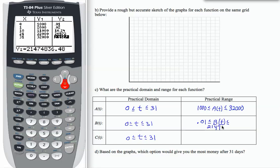So 21474836.48 because I don't have room to put that whole number up here. So the output values for function B range between 0.01 and this 21 million number here.